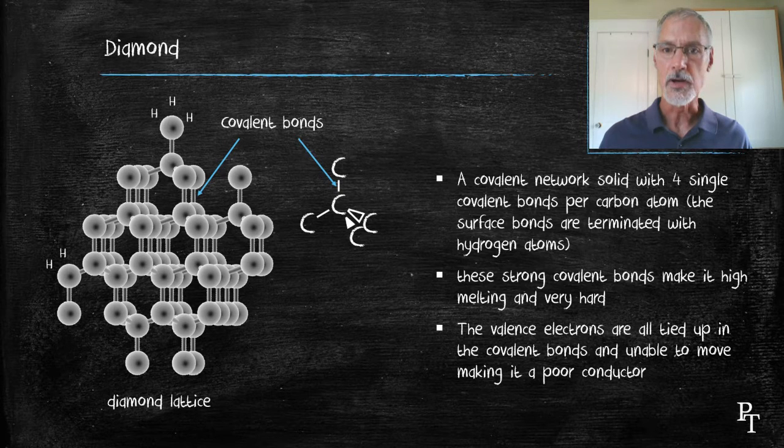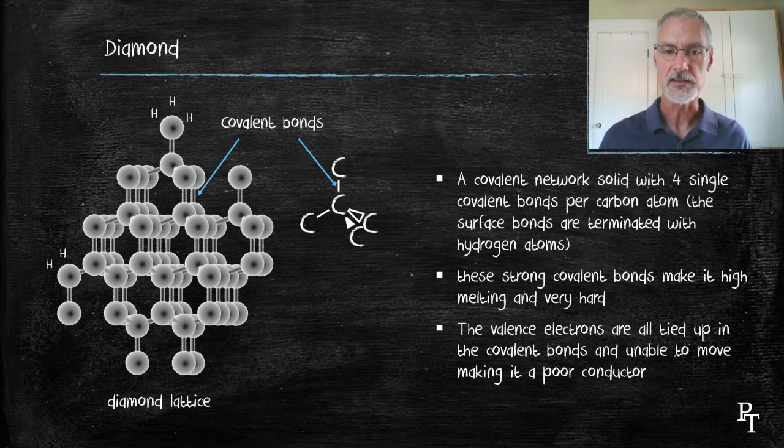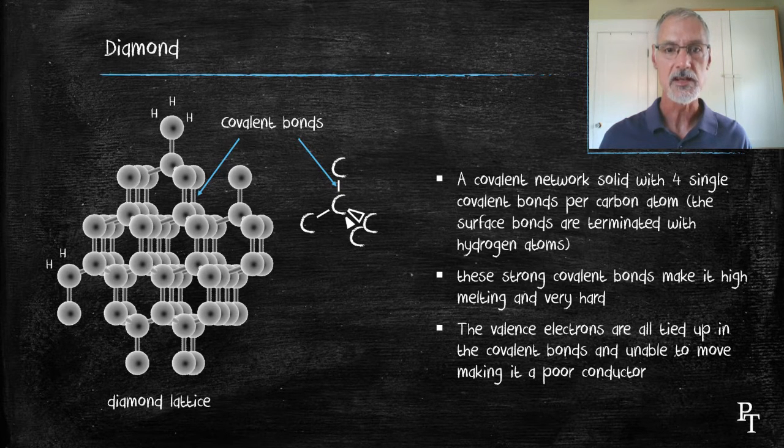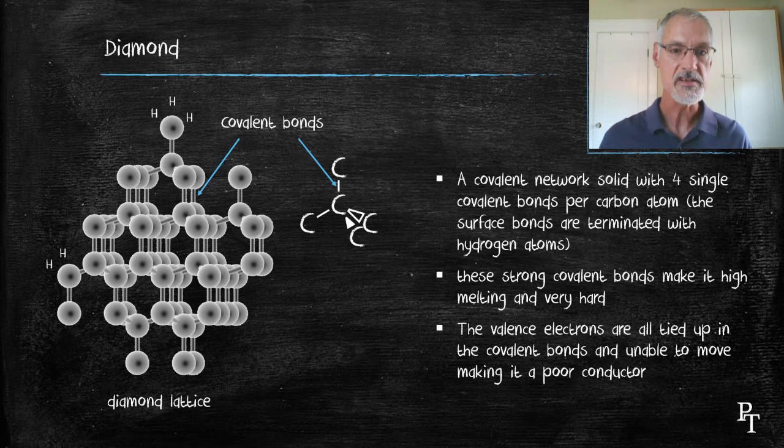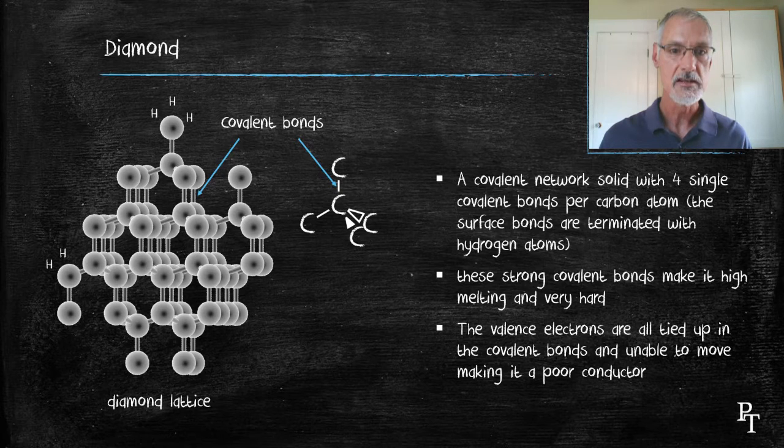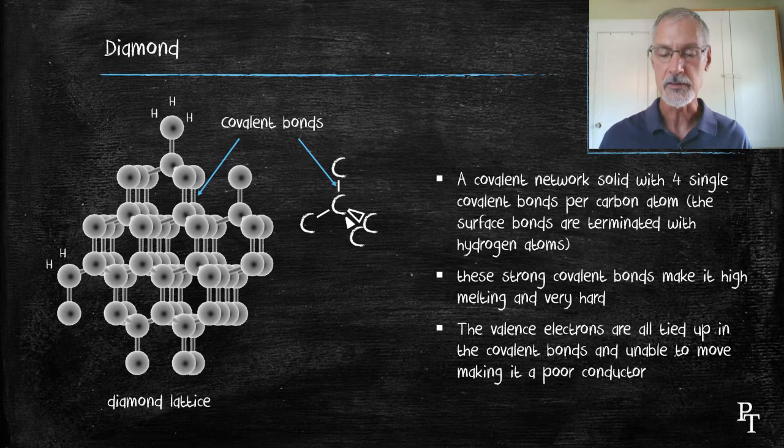As I mentioned, the covalent bond is formed by a sharing of valence electrons. Those valence electrons are locked into that place and not free to move, which is one of our conditions that's necessary to conduct electricity. So, as a result, diamond is a very poor conductor.